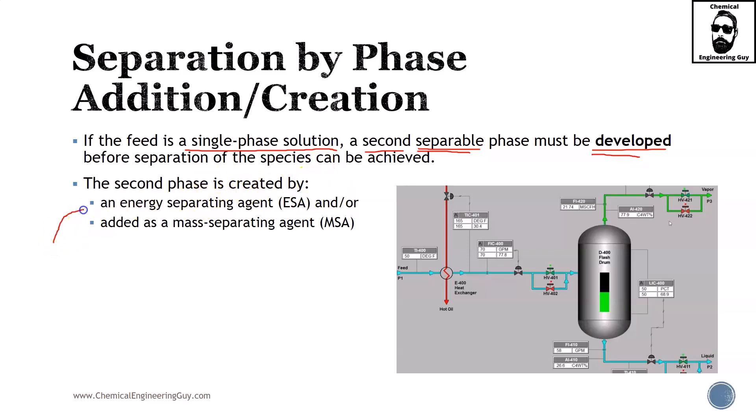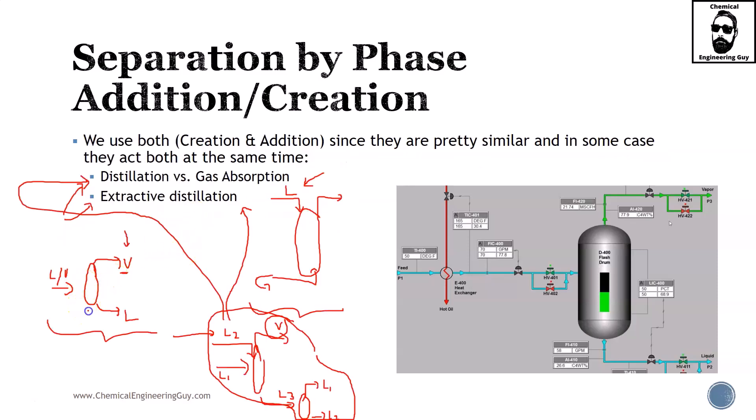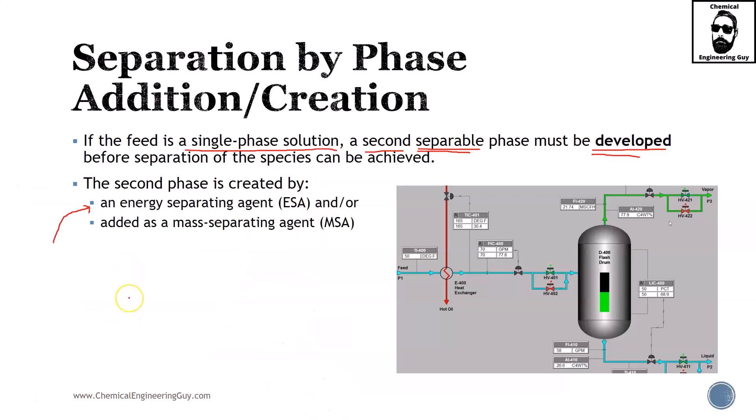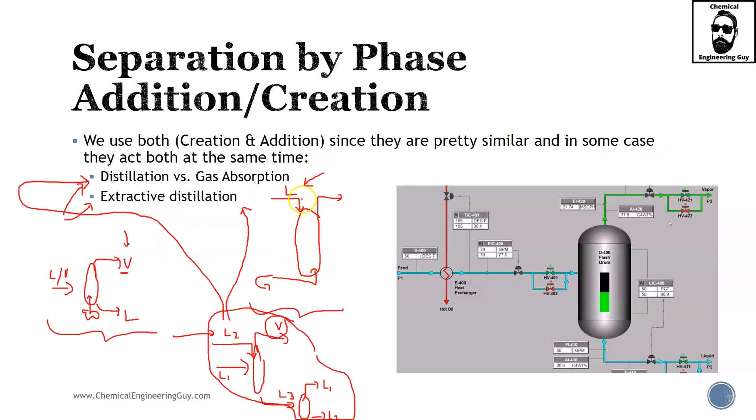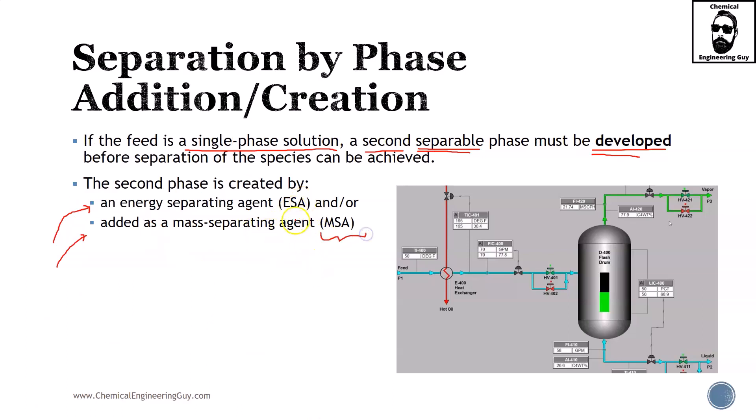The second phase will be either created by energy separating agent ESA or material separating agent MSA. For instance, in distillation you have a reboiler which produces the vapor - heat is technically the ESA. In gas absorption, you're adding a liquid material, so that's the MSA. Gas absorption requires MSA and distillation requires ESA by definition. For extractive distillation, you'll need both an ESA for vapor creation and an MSA for solvent addition.